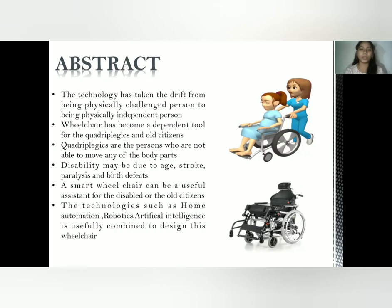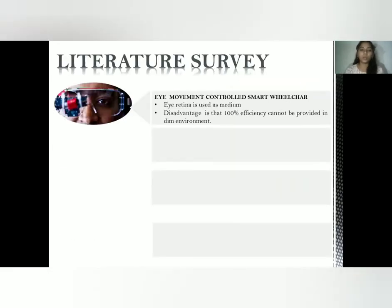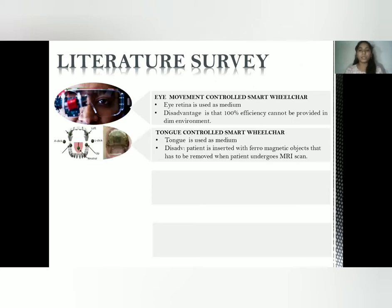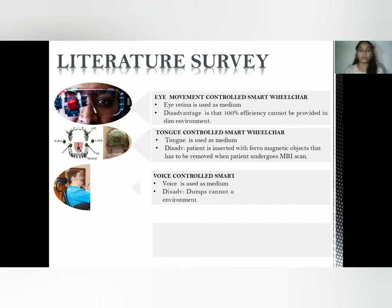Let us know what other technologies are used. The first is the eye control smart wheelchair, where the eye retina is used as the medium. The disadvantage is that it doesn't give good efficiency in dim environments. Next is the tongue control wheelchair, where the tongue has to be pierced with ferromagnetic material. The disadvantage is that whenever a patient goes for an MRI scan, the pierced magnetic material has to be removed, which is very painful and can cause infection.